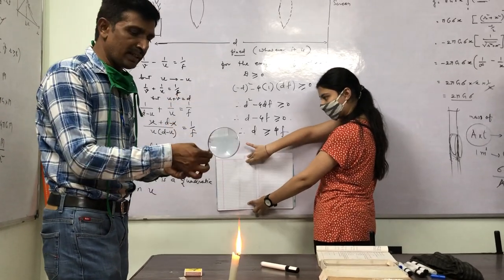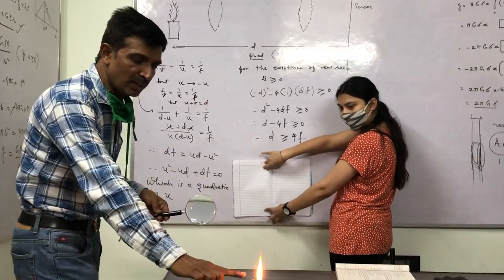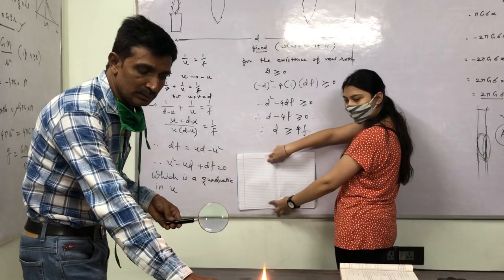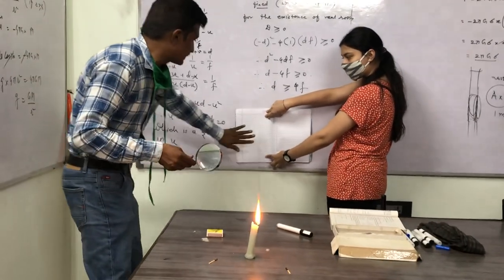This one is a convex lens, or magnifying glass. This one is a candle flame. We are using it as an object, and this one is a screen.